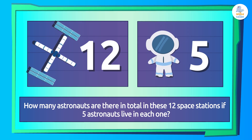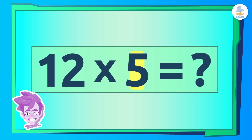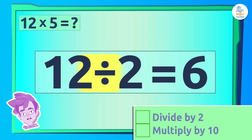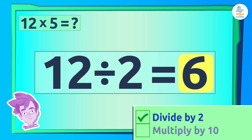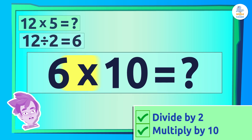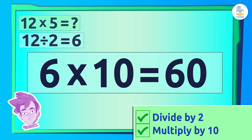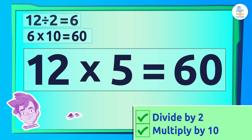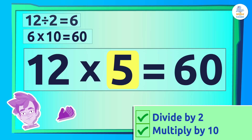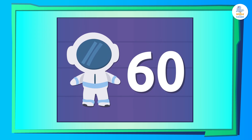How many astronauts are there in total in these 12 space stations if 5 astronauts live in each one? We have to multiply 12 times 5. To start, we divide 12 by 2, which gives us 6. Then we multiply it by 10. What is 6 times 10? 60! Great! Just like that, 12 times 5 equals 60, which is how many astronauts live on the space station.